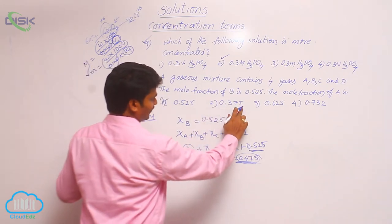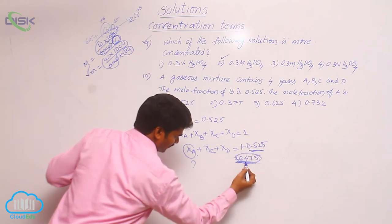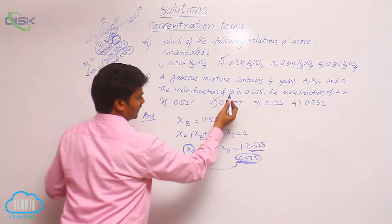Similarly 0.375. Already sum of these 3 is 0.475. That means one component may have this value. So it is the right one.